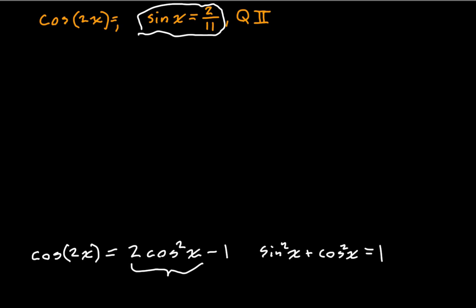I'm going to pull up another identity that you should definitely be familiar with. We know that the sine squared of x plus the cosine squared of x is equal to 1. So we should be able to solve for the cosine squared of x in terms of the sine of x. Cosine squared of x is equal to 1 minus sine squared of x.